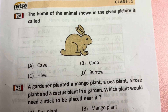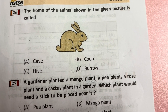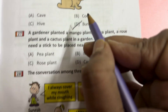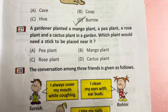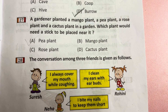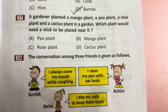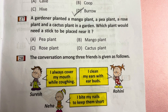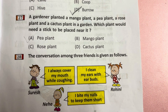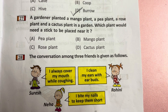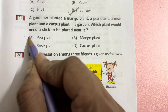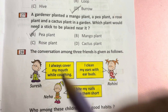Question 26: The home of the animal shown in the given picture is called a burrow. Answer is D. Question 27: A gardener planted a mango plant, a pea plant, a rose plant, and a cactus plant. Which plant would need a stick to be placed near it? A climber — that is the pea plant, as it is a climber.